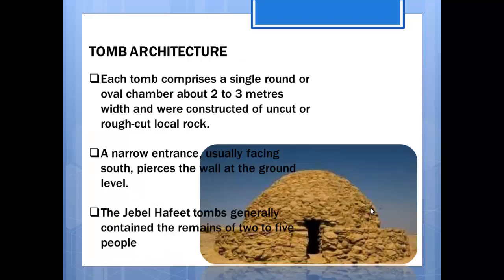Looking at the architecture of these tombs — how they were built — each tomb comprises a single round or oval chamber, about 2 to 3 meters in width. These tombs were constructed of very rough rocks; they were not polished or smooth. The stones as they are were used to build these tombs. Also, the entrance is very narrow, and they built the tomb in such a way that this narrow entrance faces the south.